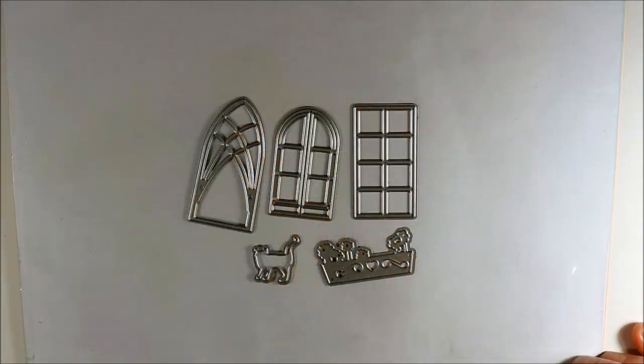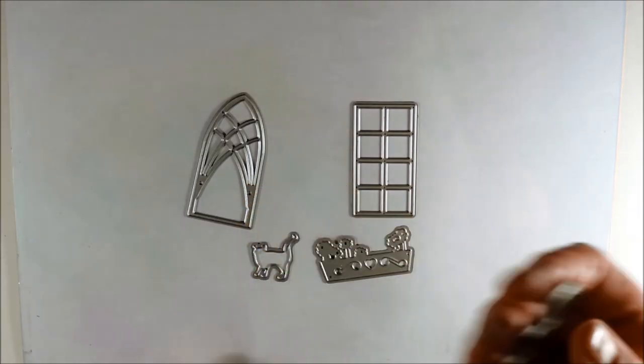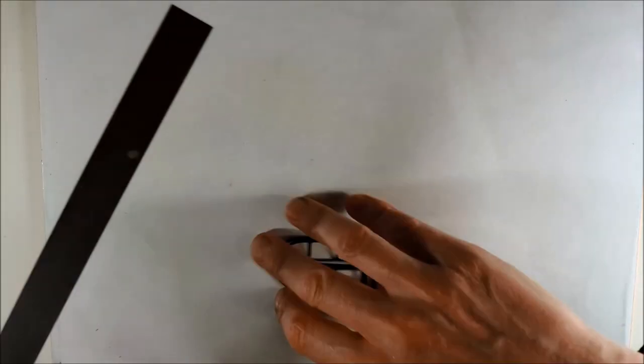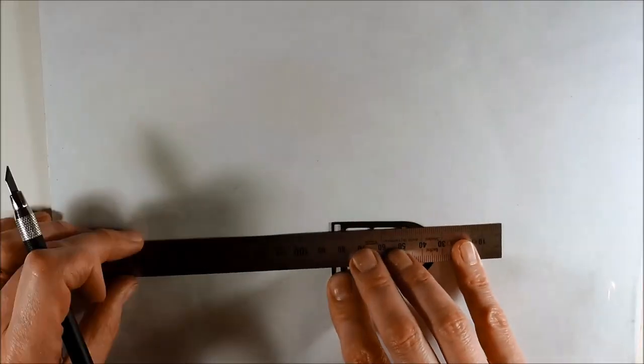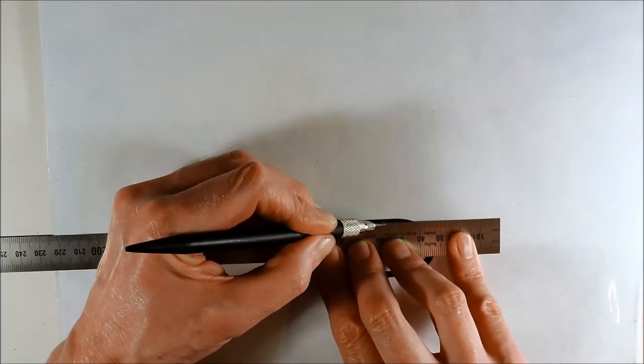Then I am cutting out a window using this die from some black cardstock. With the back side of an exacto knife, I am scoring the edge of the window so it will be easier to fold the window open.